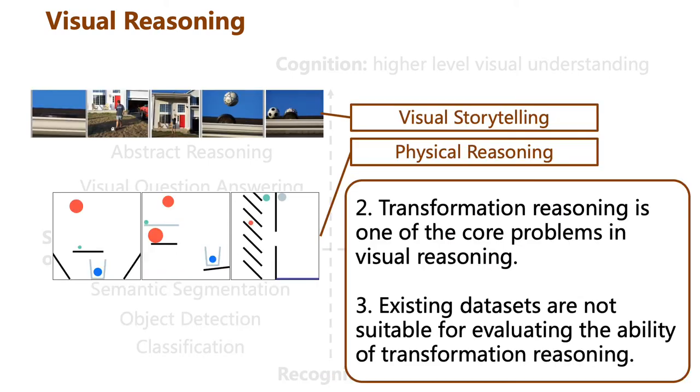Actually, in some visual reasoning tasks, transformation is one of the core problems. For example, in visual storytelling, you need to understand the transformation between images to write a consistent story, where you need to understand the dynamics before choosing the correct action in physical reasoning. However, with current examples, we have no idea how models reason transformation.